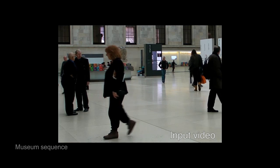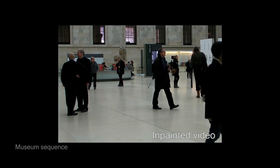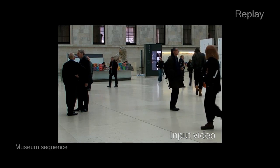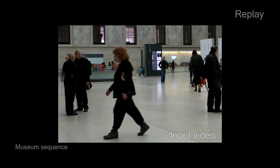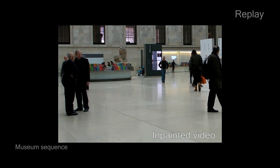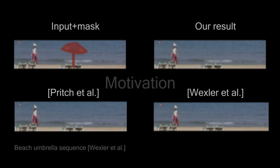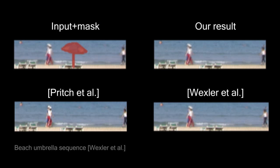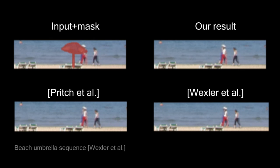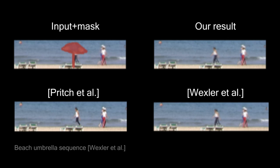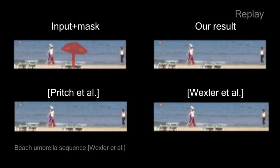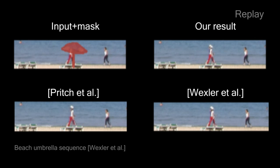In this video, we present a new method for non-parametric video inpainting that outperforms current methods. The state-of-the-art non-parametric method of Wechsler et al. works well with low resolution videos. Naive extensions of two-dimensional inpainting methods to videos, like extending the shift maps of Pritch et al., can also succeed with low resolution video.